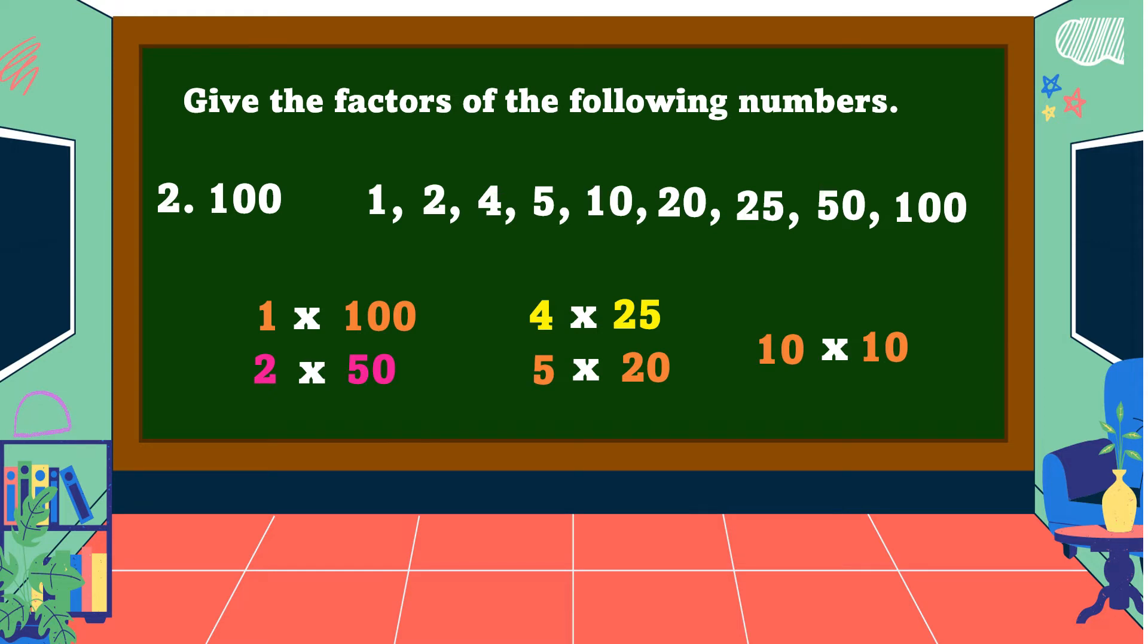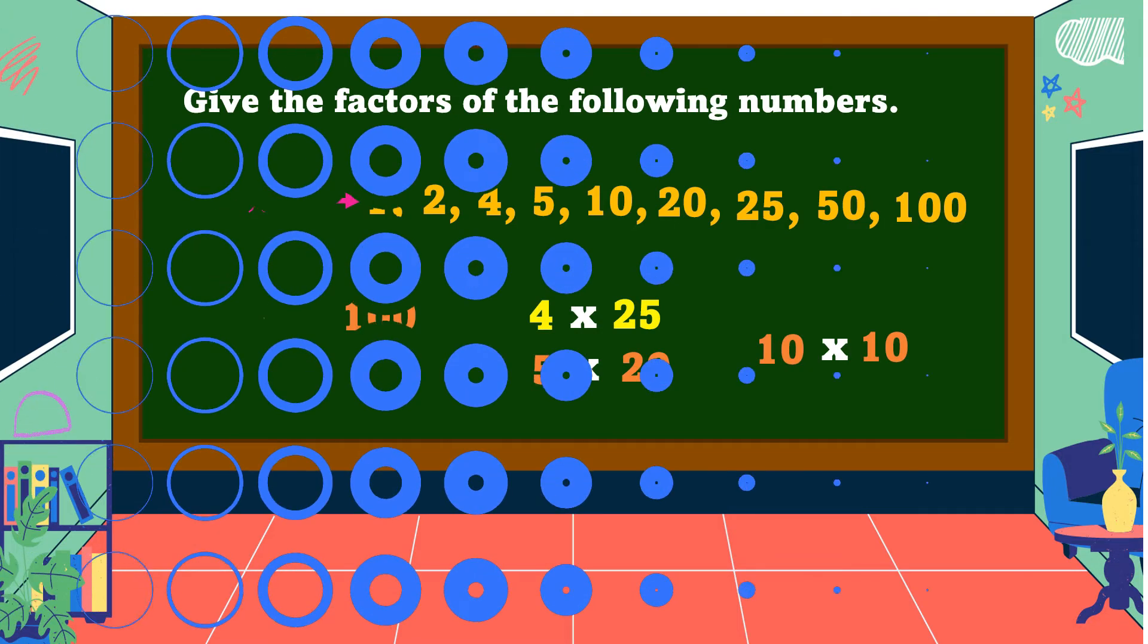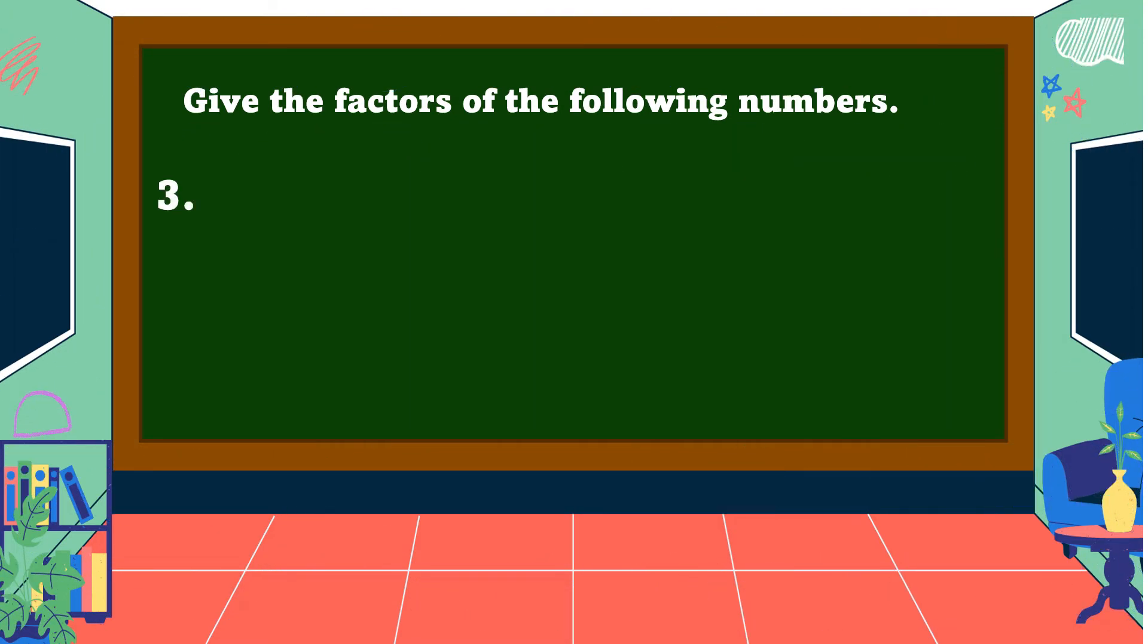So the factors of 100 are 1, 2, 4, 5, 10, 20, 25, 50, and 100.